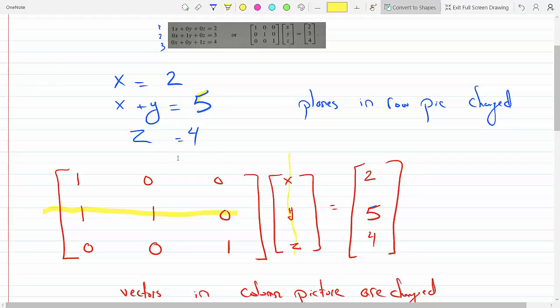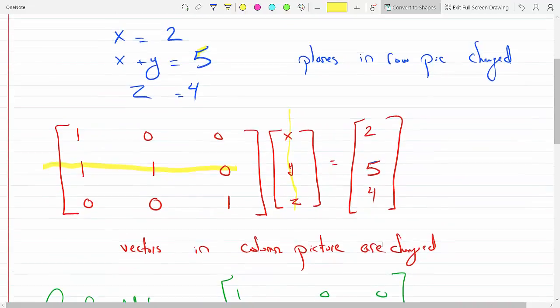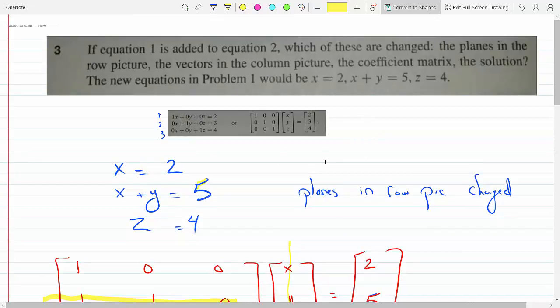And then similarly, for the last equation, I don't have any x and y, so those coefficients are 0, 0. z is 1, so that would give me 1z equals 4. And we can see that the vectors in the column picture are changed from the one above.